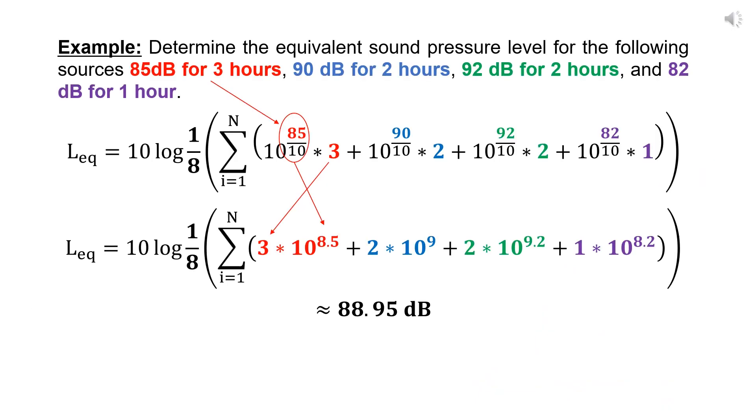For example, determine the equivalent sound pressure level for the following sources: 85 decibels for 3 hours, 90 decibels for 2 hours, 92 decibels for 2 hours, and 82 decibels for 1 hour. In this case, to hurry up the calculations, we can divide the number of decibels by 10, and move the numbers of hours in front.